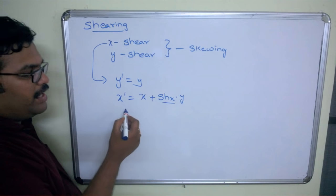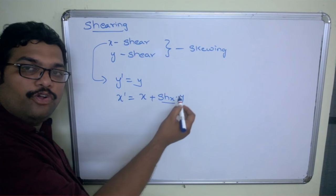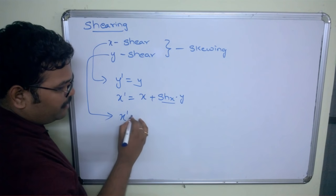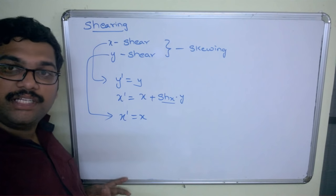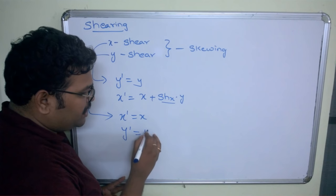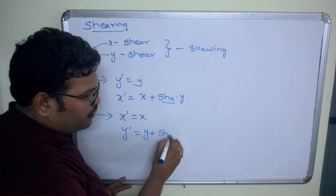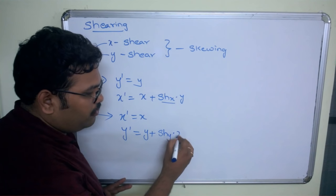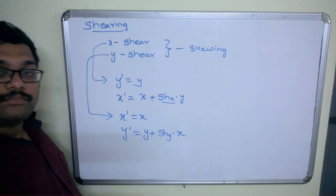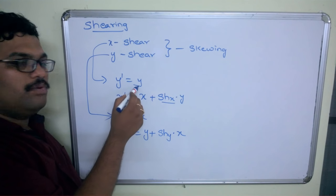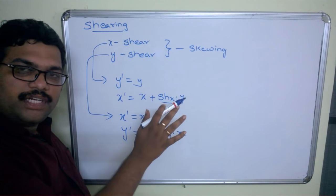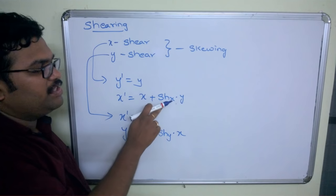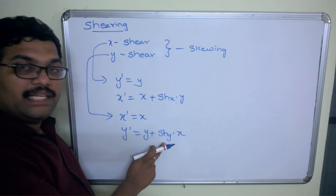In x-shear: y-dash is equal to y, and x-dash is equal to x plus the shearing parameter shx into y. In y-shear: x-dash will be the same — there will be no change in the x-coordinate — and y-dash is equal to y plus shy into x, where shy is the shearing parameter with respect to the y-axis.